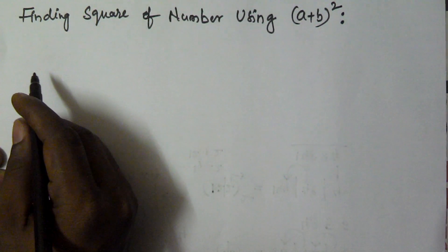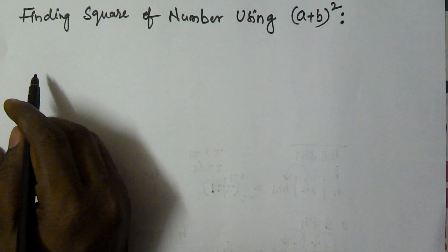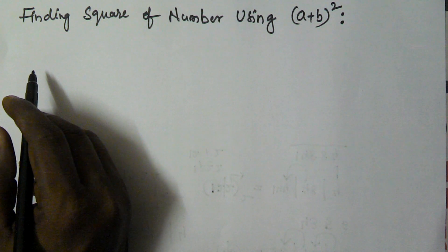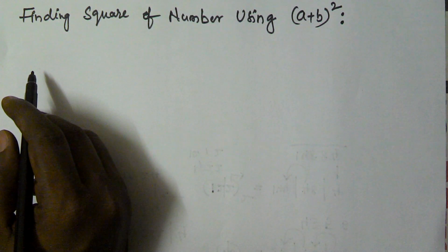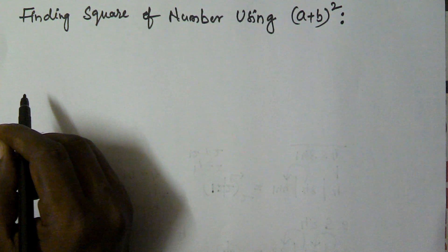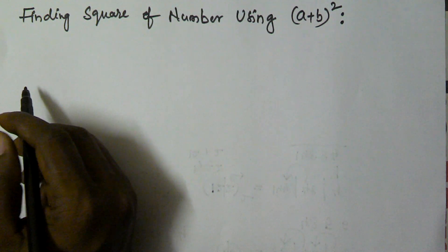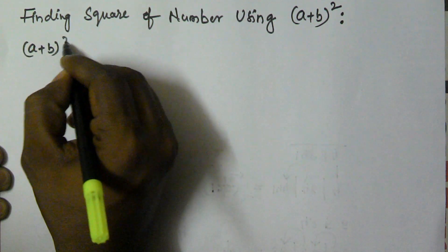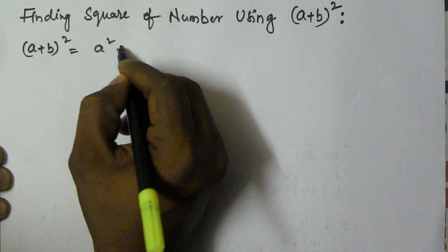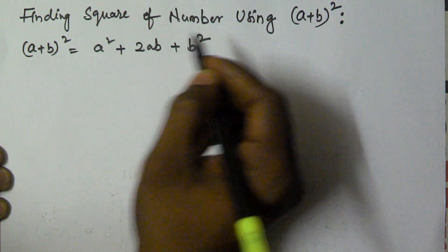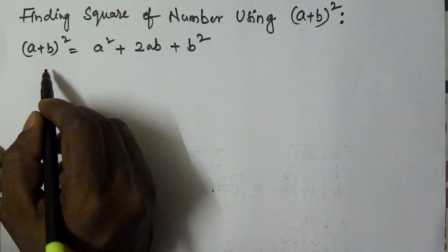Hello everybody. In this video I am going to show you how to find the square of a number using the (a+b)² formula. This method is going to be very easy and efficient compared to the conventional method, and it allows for fast calculation. So a plus b whole square is equal to a² plus 2ab plus b².